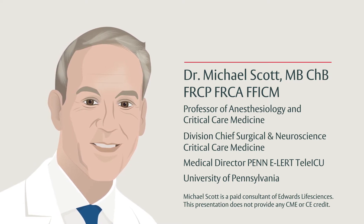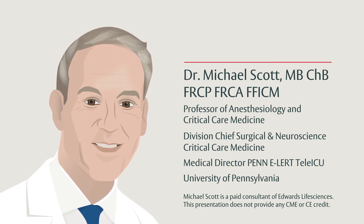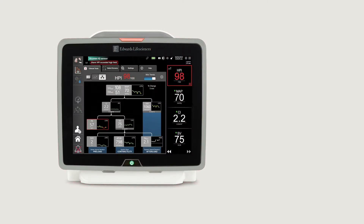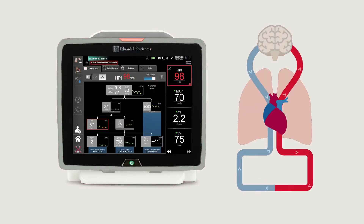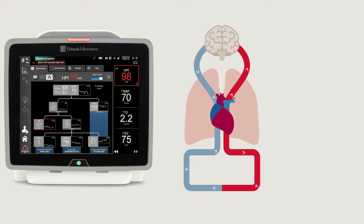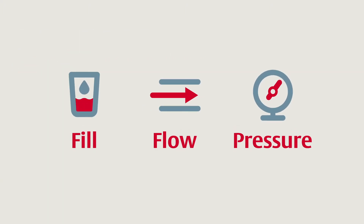In this video, I'll discuss how to use parameters provided by Acumen HPI software to optimise patient circulation, namely by managing preload and cardiac output and ensuring adequate perfusion pressure. Using the simple principle of fill, flow, pressure makes balancing the circulation very simple.